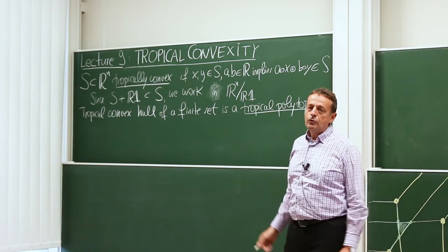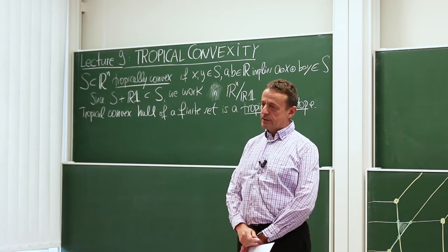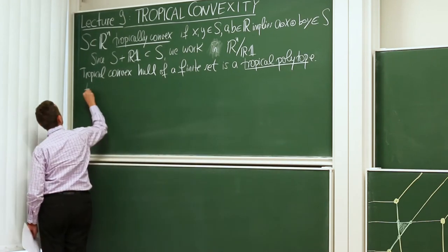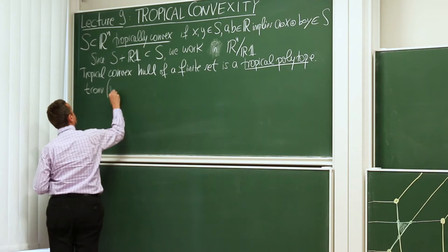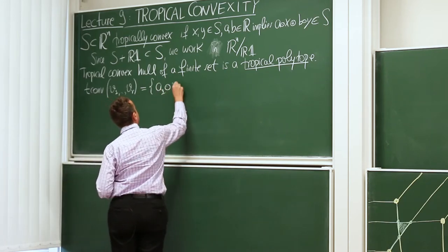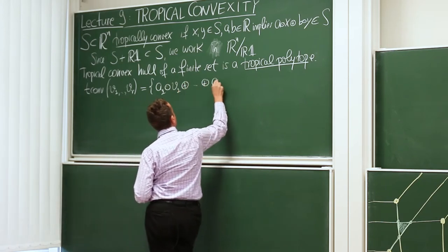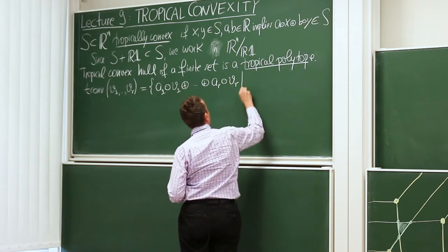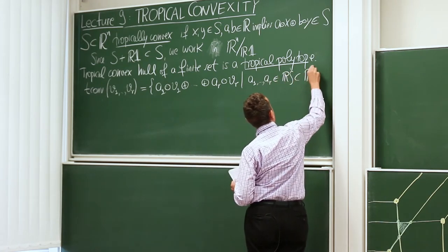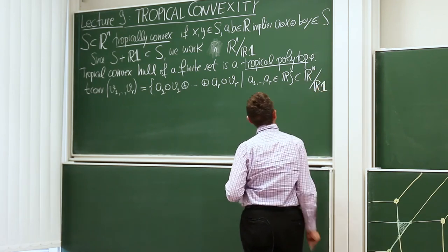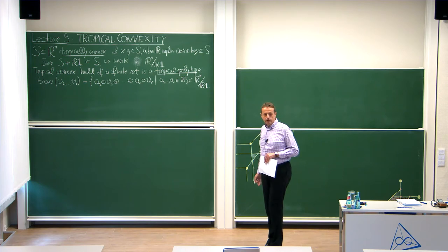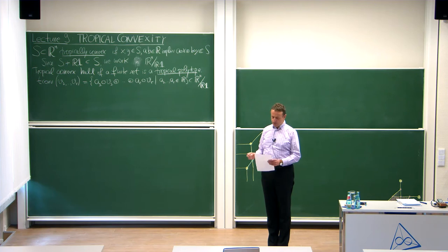Another way to say this: a tropical polytope is a finitely generated sub-semi-module of R to the N with respect to the tropical operation. We use the notation T-conv for the convex hull of R vectors V1 up to Vr. It's easy to check that that's simply A1 times V1 plus plus AR times Vr, where the multipliers A1 up to AR are arbitrary real numbers. We always regard this in the N-minus-one-dimensional space R^N modulo scaling.